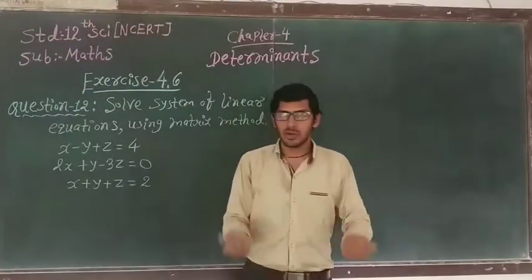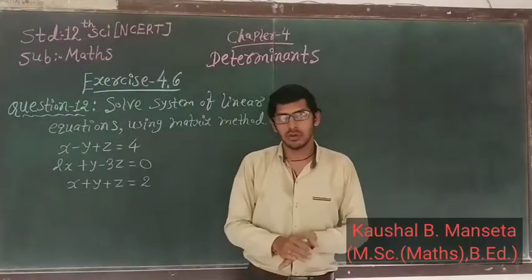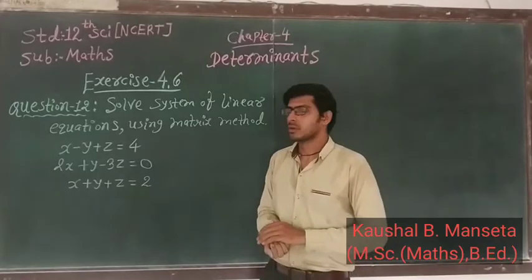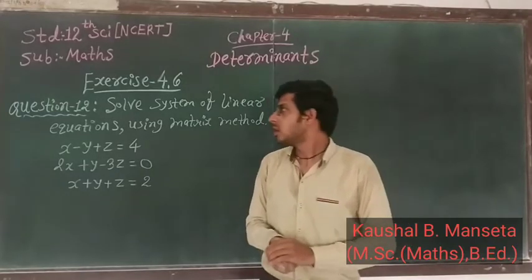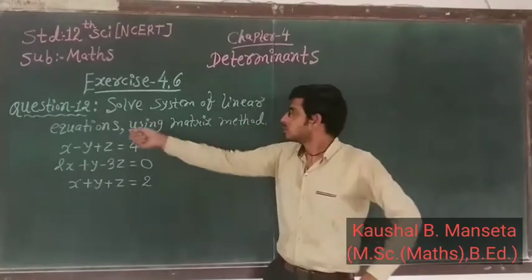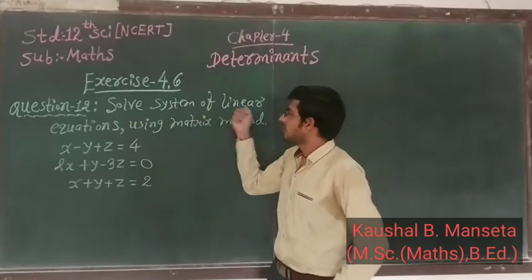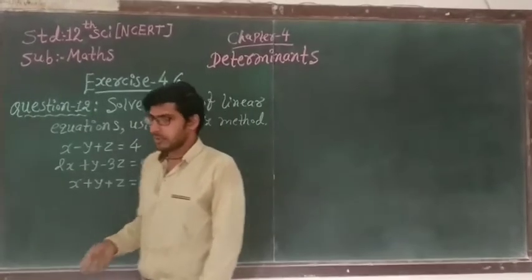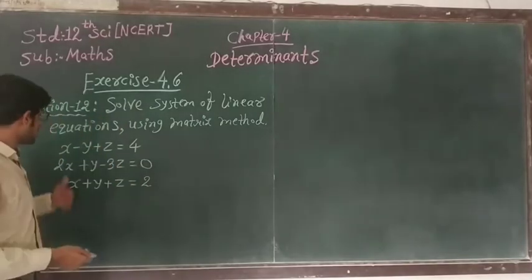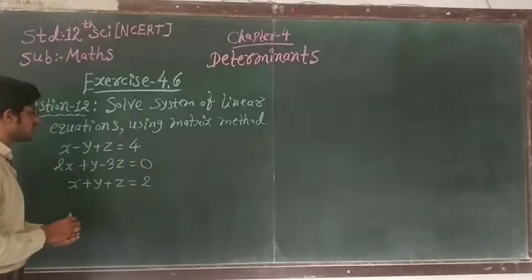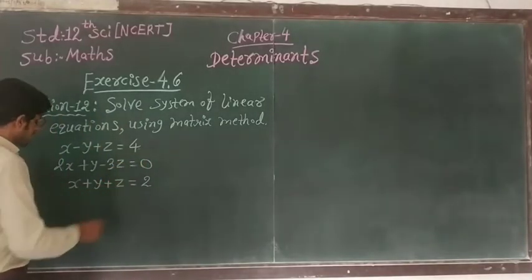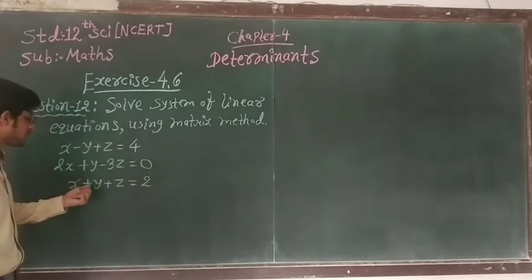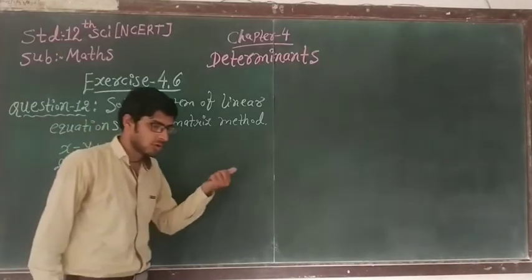Good morning friends. Today we are going to learn exercise 4.6, chapter number 4, determinants, question number 12. We have to show a system of linear equations using the matrix method. Here three equations are given: first, x minus y plus z equals 4; second, 2x plus y minus 2z equals 0; and third, x plus y plus z equals 2.